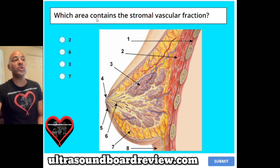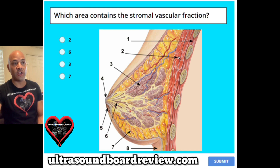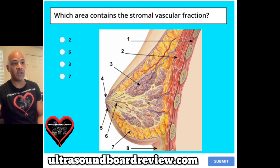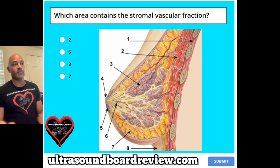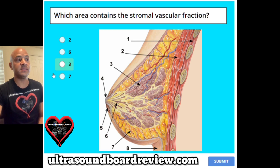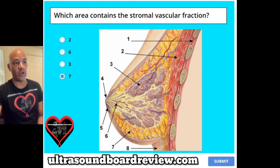Question 21. Which area contains the stromal vascular fraction? 2 — this region here, 6 — this region here, 3 — this region here, or 7 — this region here? The answer is 7, this area right here.